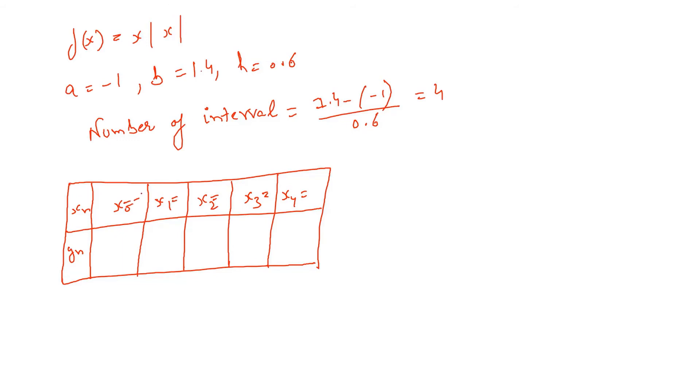So x naught would be the lower limit which is minus 1. So at that point x1 would be minus 0.4, x2 would be 0.2. Similarly, y naught would be minus 1, y1 would be minus 0.16, y2 would be 0.04.